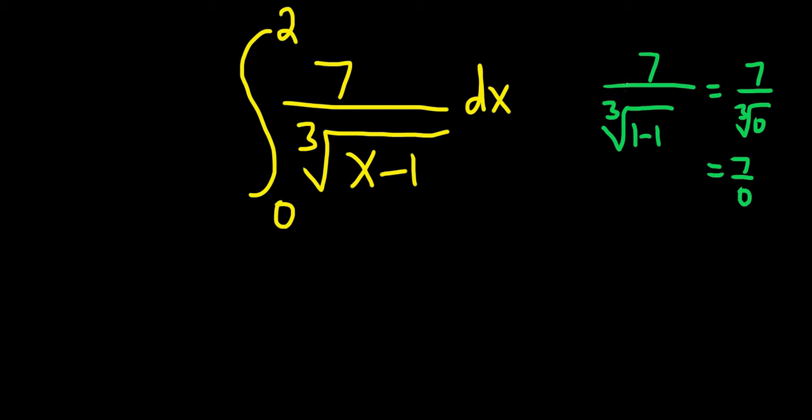So this function here is not continuous at 1 and 1 is between 0 and 2, those are your limits of integration. This is an improper integral. So to do this problem, what we're going to do is we're going to break it up at 1 because 1 is the problem area, 1 is where you have the discontinuity.